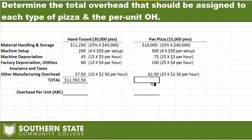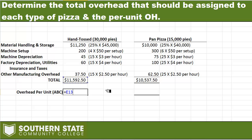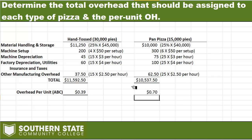Adding everything up, I'm going to apply $11,592.50 of overhead to the hand-tossed and $10,537.50 to the pan pizza. To get a per unit amount, I divide the total applied overhead by the number of pies made. Dividing $11,592.50 by 30,000 hand-tossed pies gives me $0.39 per pie. Dividing $10,537.50 by 15,000 pan pies gives me $0.70 per pie. That is the amount of overhead to apply to each product.